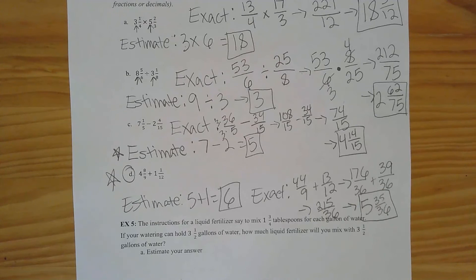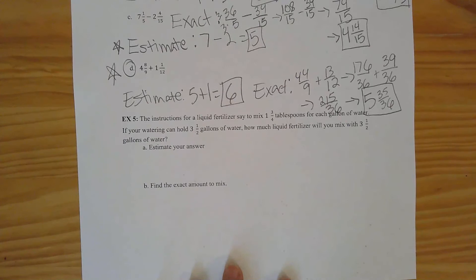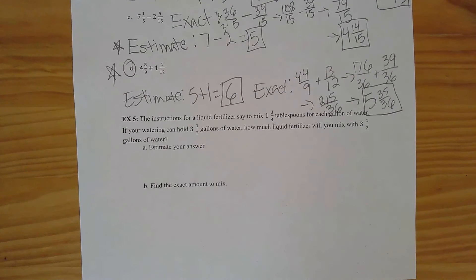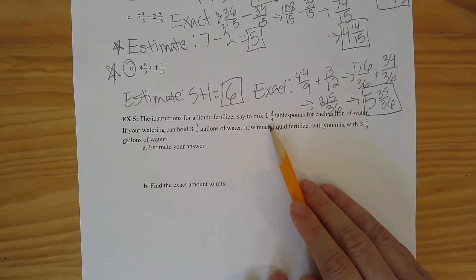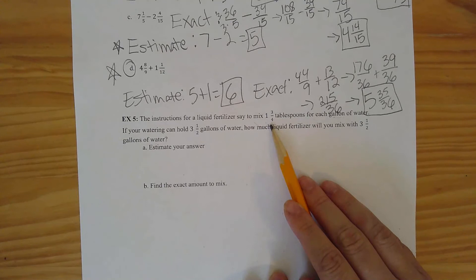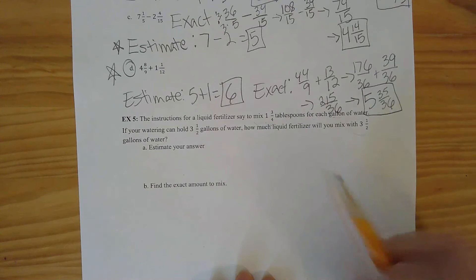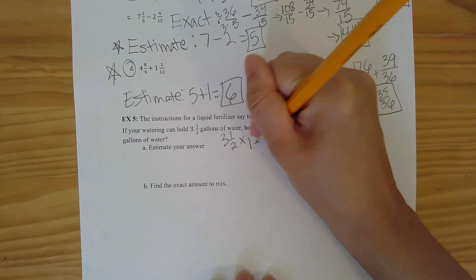The last one is a word problem. The instructions for a liquid fertilizer say to mix one and three-quarters tablespoons for each gallon of water. If your watering can holds three and a half gallons, how much liquid fertilizer will you mix? For one gallon you'd use one and three-quarters tablespoons; for two gallons, twice that; for three gallons, three times that. So for three and a half gallons, we'd use three and a half times one and three-quarters.